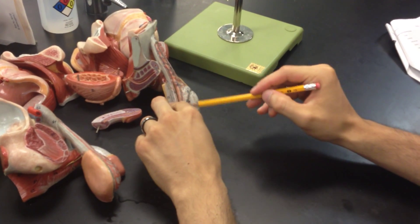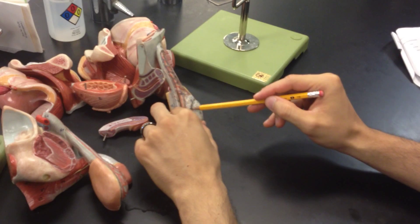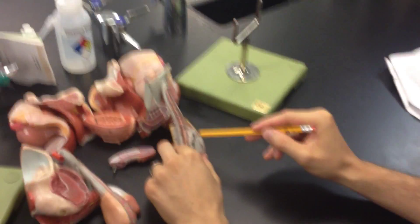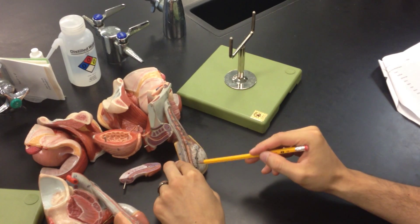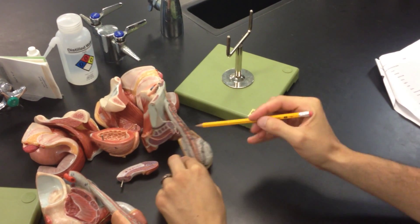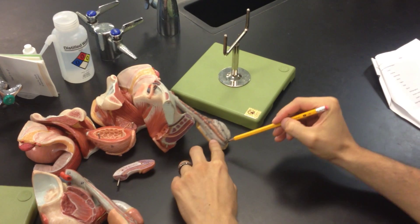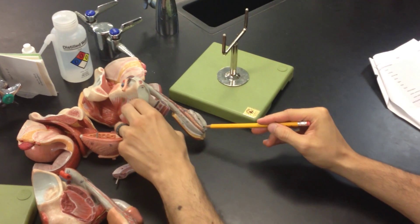On top of the testis you have this structure here, that's going to be your epididymis. Epi—part on top, and then didymus. From the epididymis you're going to see that connection. Everybody see that part right there?